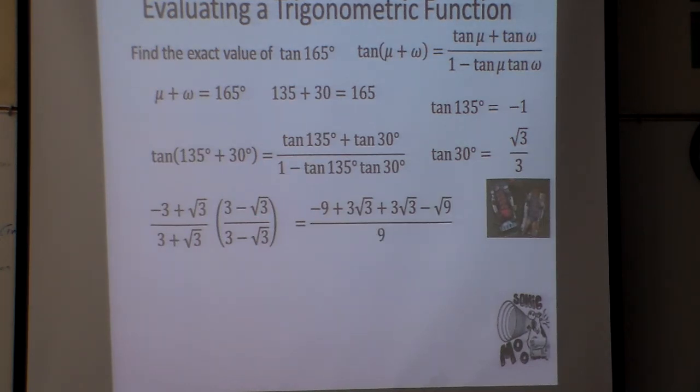And when I FOIL the bottom one, 3 times 3 is 9. The outside term, 3 times negative square root of 3 is minus 3 square root of 3. The inside term is 3 square root of 3 when I multiply it. And then when I multiply the last term for my FOIL, I get minus square root of 9.